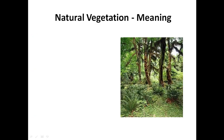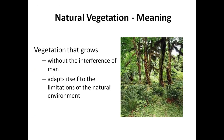First, let us understand what natural vegetation means. Natural vegetation is that which grows without the interference of any human. Such vegetation adapts itself to the limitations of the natural environment — whatever resources and nutrients are available in the environment, the vegetation nourishes and grows accordingly.